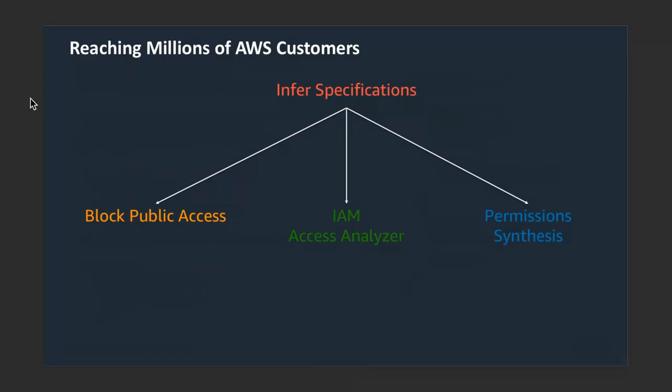The takeaway is that to make verification accessible to millions of AWS customers, you really have to think about how you can extract and infer specifications — which to customers is their intent — and make it customizable to their use case, available at scale, where they don't have to think about what they're asking, because it's integrated in their regular workflows.